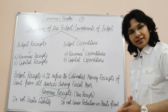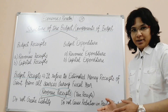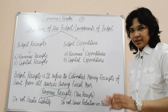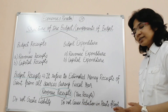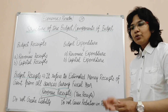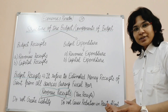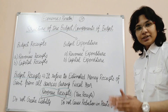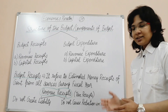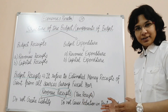Tax receipts are revenue receipts because tax is a compulsory payment that households and firms must pay to the government without expecting anything in return. When tax is paid, the government's assets are not reduced — unlike when government securities are sold, which does reduce assets. So, revenue receipts do not create liability and do not reduce government assets.